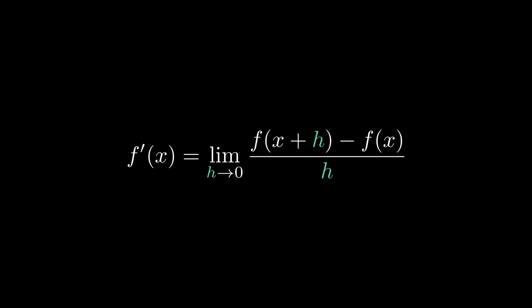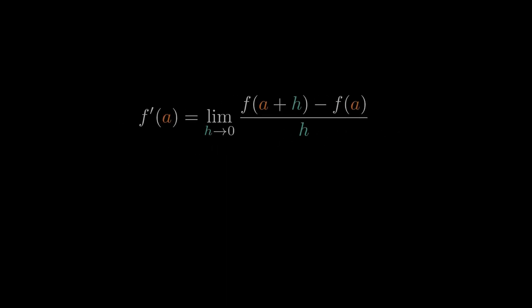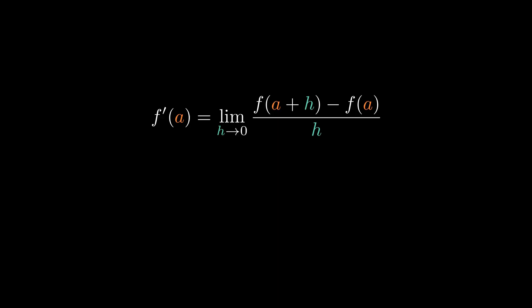Today we are going to be going over how to find it at a specific point. So instead of getting a generic formula, we're going to get the value — it's going to tell us this is the slope. To denote this, we use this definition, which states that f prime of a is equal to the limit as h approaches 0 of f of a plus h minus f of a all over h. A is going to represent the x value that you want to find the derivative at, so you would just substitute that x value into a.